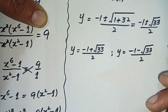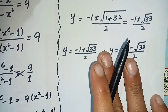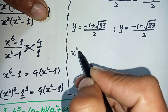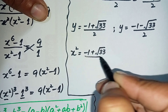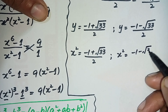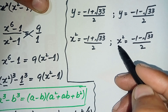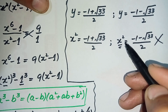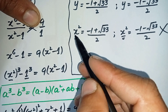Since we set y equal to x squared, we replace y with x squared. So x squared equals (negative 1 plus square root of 33) divided by 2, or x squared equals (negative 1 minus square root of 33) divided by 2. Since x squared is always a positive number, the second value is negative and cannot be a solution. We will only solve for the first value.